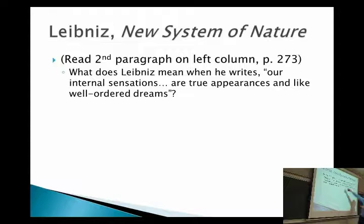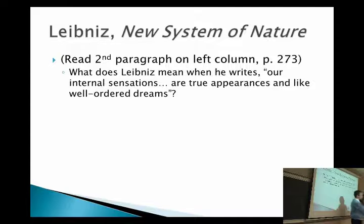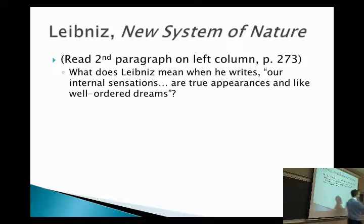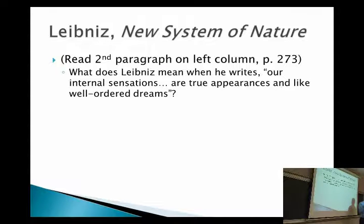What he's saying is that every substance — every simple thing — the complete concept of it contains its past, present, and future. What happens with mind and body is not that the two interact with one another. He doesn't think there is a way to explain how mind can interact with body. And he doesn't think that God is going to perform a miracle every time we need that interaction — that's too sloppy. God would do better than that.